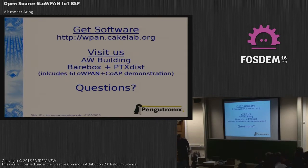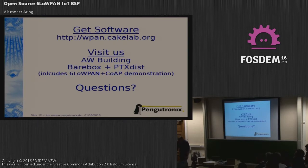You talked a bit about Bluetooth Low Energy there. I'm wondering, are you aware that there's a new specification coming along which makes some changes which might affect 6LoWPAN — increases in packet size and that type of thing?